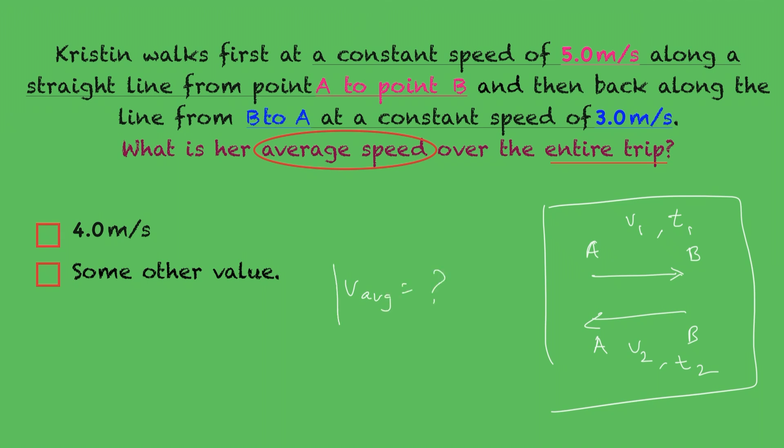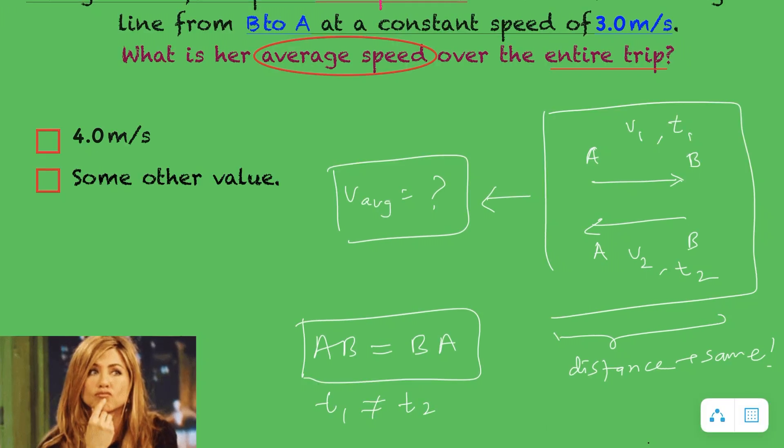The speed one way, say from A to B, is given and is different when she returns. This means that the time Kristen takes to travel the same distance is different because of different speeds. So far, we know the total distance, which is equal to 2D, one-way D distance.